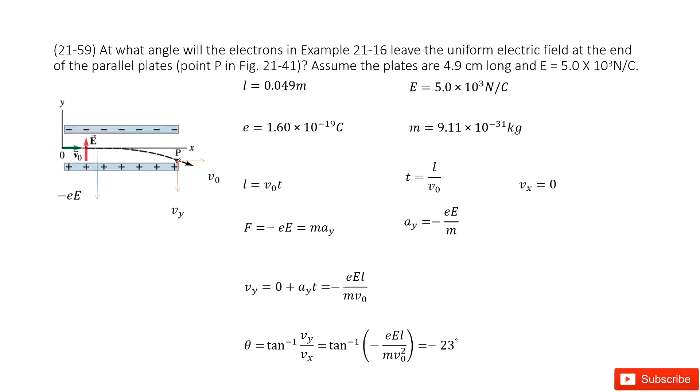First, we write down the given quantities. The length of the plane is given L, the electric field E is given, the fundamental charge e is given, and the mass m is given for the electrons.